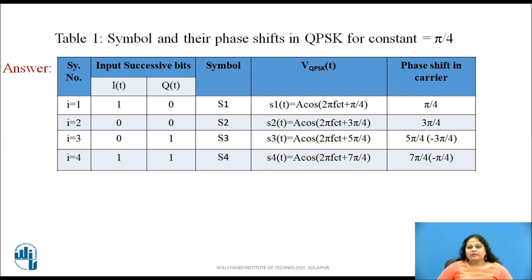The table shows the four symbols of QPSK and its representation. As shown they are combined by phase shifting the carrier signal cos of 2 pi fct by pi by 4, 3 pi by 4, 5 pi by 4 and 7 pi by 4.